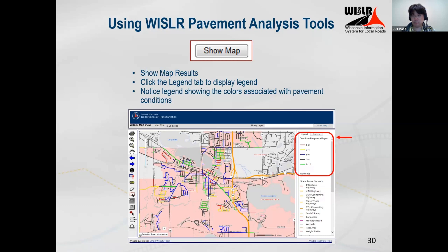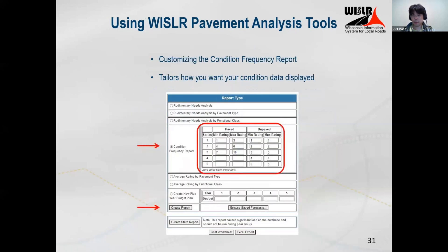If you have more extensive mapping needs and GIS capabilities, that's something you might want to reach out to WisDOT for. But the condition frequency report map is a one-click button that does all this breakdown immediately. There's actually a lot of flexibility you can incorporate into the report if you need to do something different, and we're going to go over how to customize it.